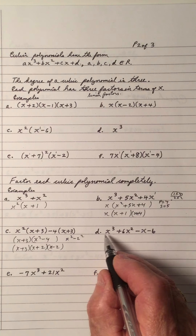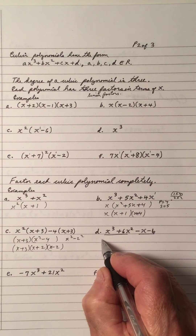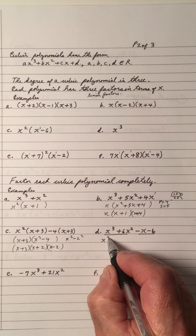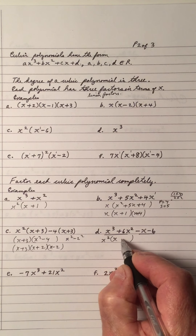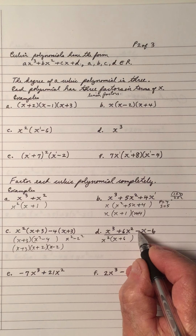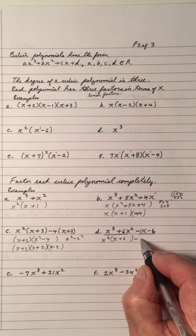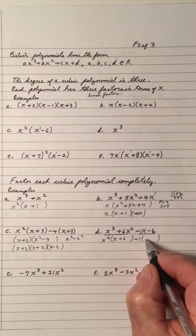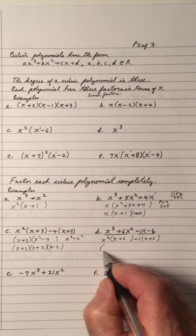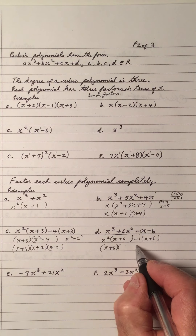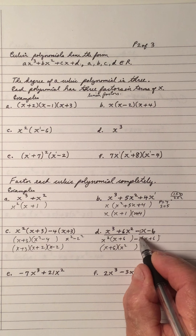Example D has four terms — nothing common in all four terms, so we break them into two pairs. In the first two, x squared is the GCF. x cubed divided by x squared is x. 6x squared divided by x squared is 6. We have a negative here, so we take the negative. There's nothing common in the last two — only 1 — so we take out a negative 1. Negative x divided by negative 1 is x. Negative 6 divided by negative 1 is 6. Now we have a binomial GCF of x plus 6.